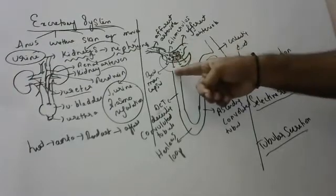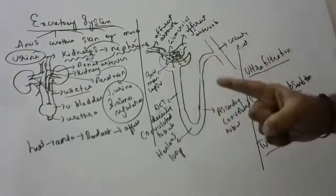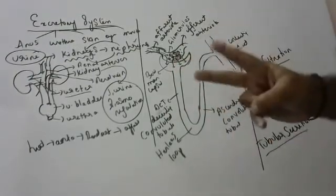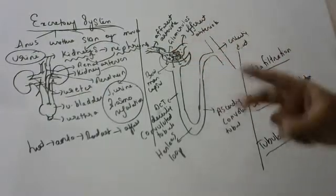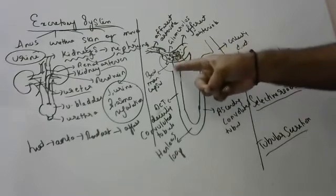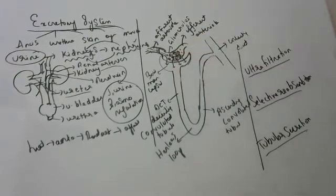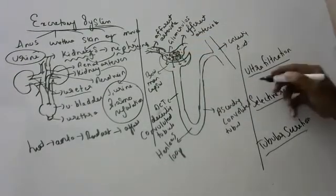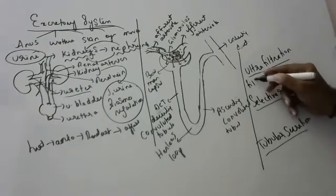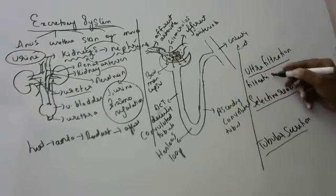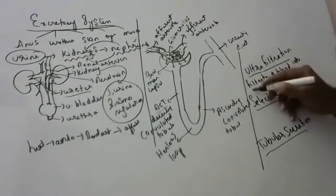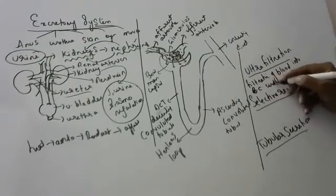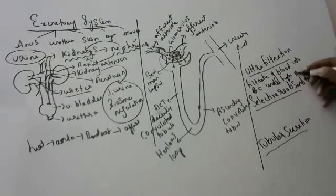The filtration of blood into the Bowman's capsule under high pressure is called ultrafiltration. I am already writing: filtration of blood into Bowman's capsule under high pressure is called ultrafiltration.